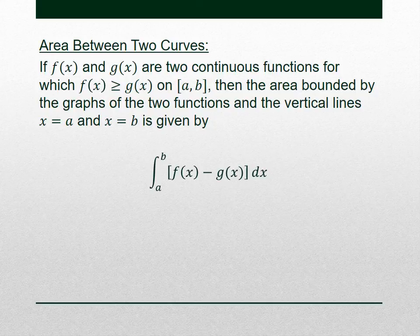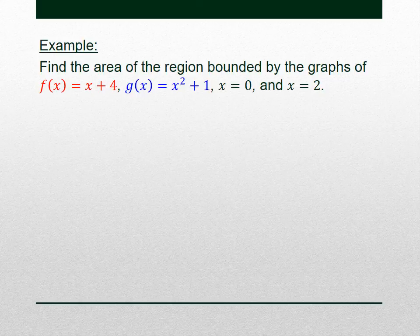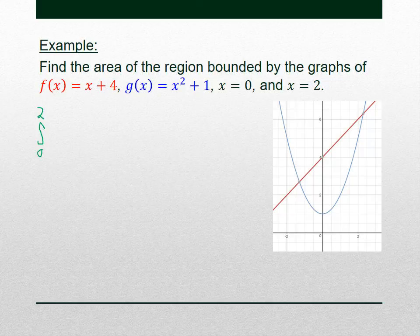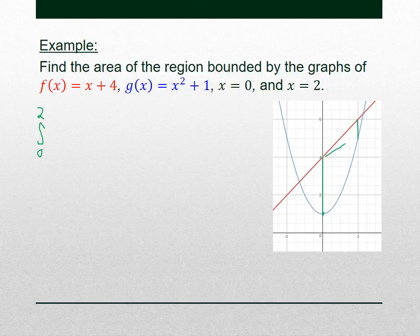Let's do an example: find the area of the region bounded by the graphs of f and g, bounded by x = 0 and x = 2. We know this is going to show up as a definite integral from 0 to 2. We need to figure out which one is the top guy. The easiest way is to graph them — the red is f and blue is g, and from 0 to 2 the red guy is on top the whole time.